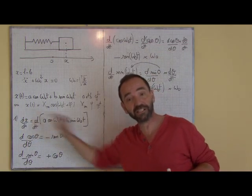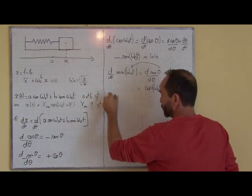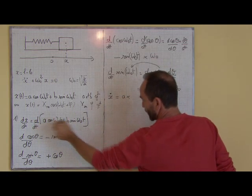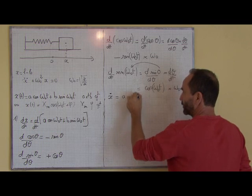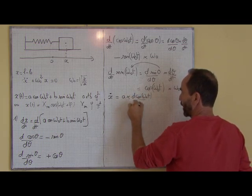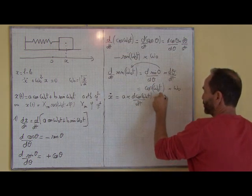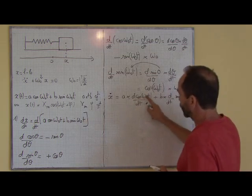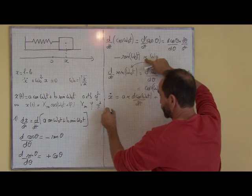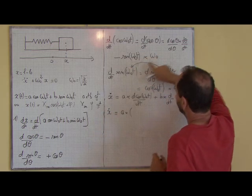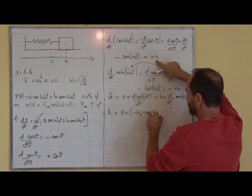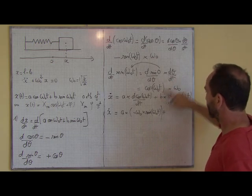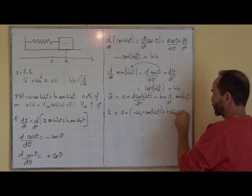On va se servir de ces deux expressions pour dériver x par rapport au temps. La dérivée de x par rapport au temps, notée ẋ, est égale à : A fois la dérivée de cos(ω₀t) par rapport au temps, plus B fois la dérivée par rapport au temps de sin(ω₀t). Ce qui donne ẋ = A·(−ω₀·sin(ω₀t)) + B·ω₀·cos(ω₀t).